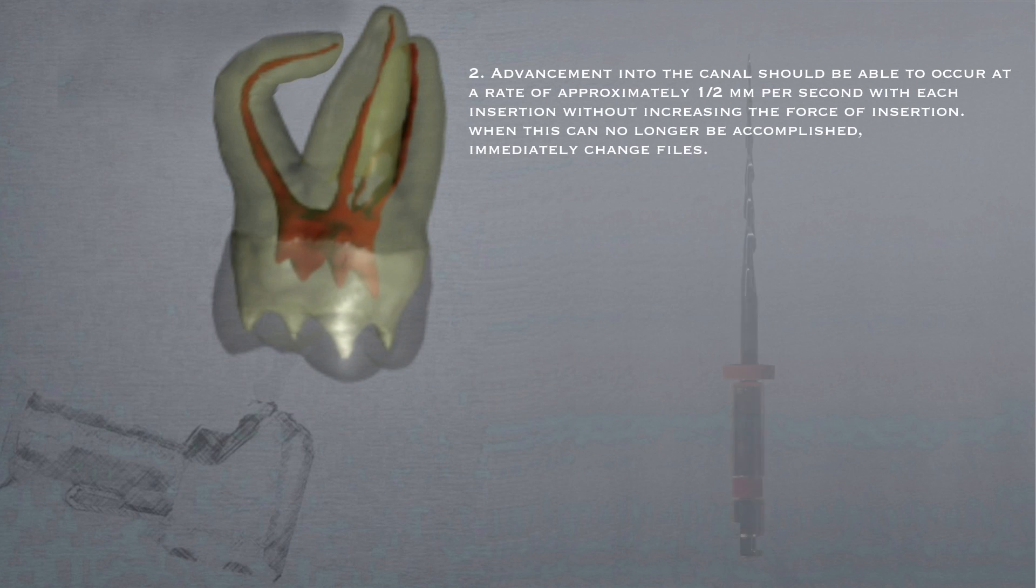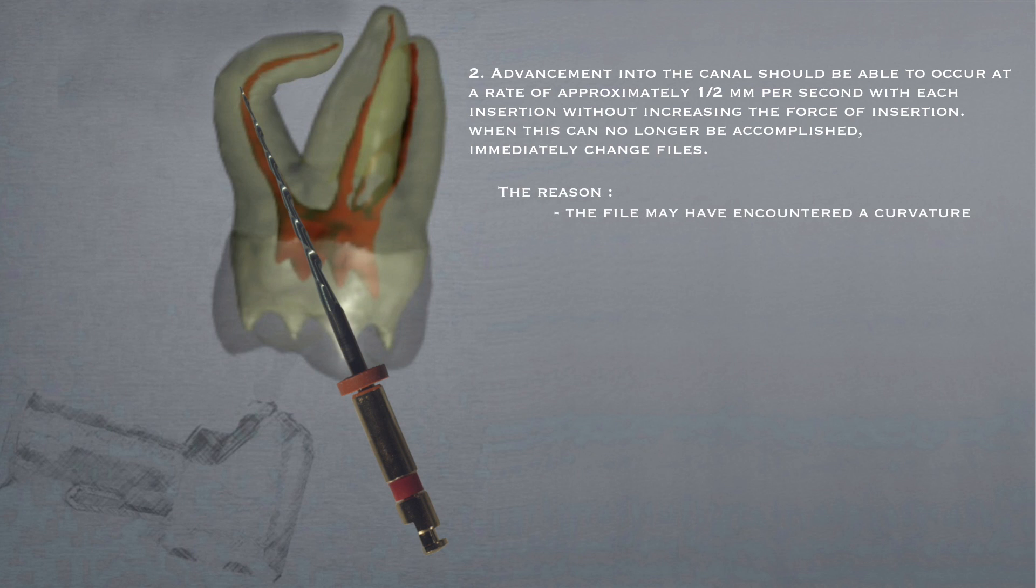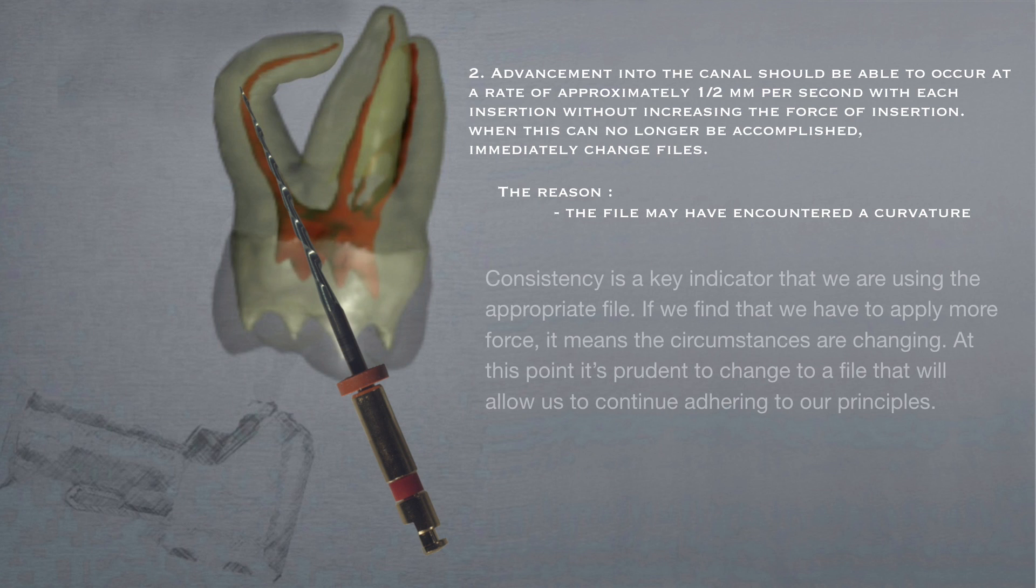Advancement into the canal should be able to occur at a rate of approximately 1.5 mm per second with each insertion without increasing the force of insertion. When this can no longer be accomplished, immediately change files. The reason? The file may have encountered a curvature. Consistency is a key indicator that we are using the appropriate file. If we find that we have to apply more force, it means the circumstances are changing. At this point, it's prudent to change to a file that will allow us to continue adhering to our principles.